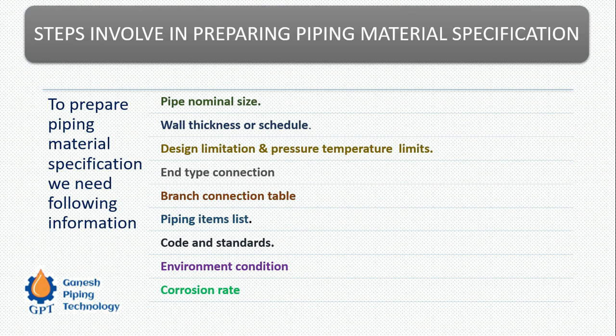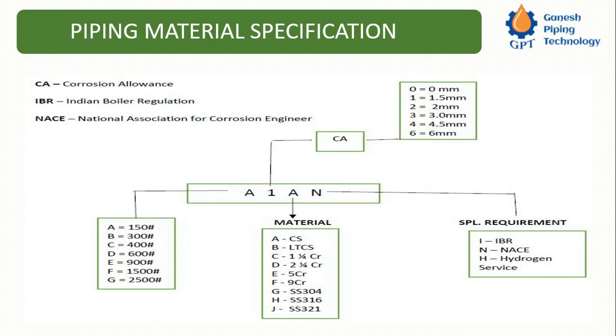These codes and standards are meticulously specified in the piping material specification. Environmental conditions such as ambient temperature and corrosion rate are also included. NACE-compliant specs consider extra corrosion allowance — for example, 3 mm, 4.5 mm, or 6 mm extra. This corrosion rate determines the corrosion allowance (CA). The piping material specification class name, such as 'A1A N', is a coded designation, and we will now understand how that coding is formed.